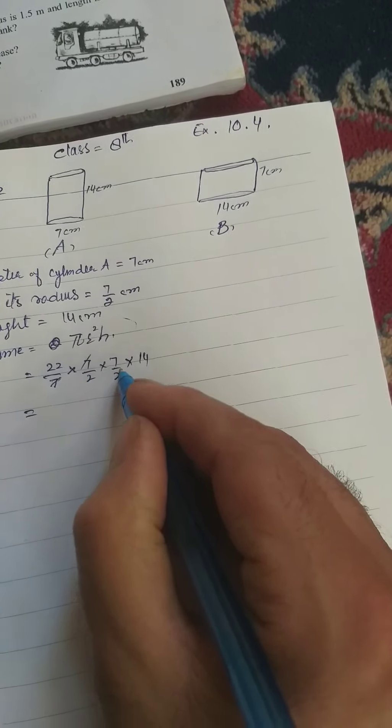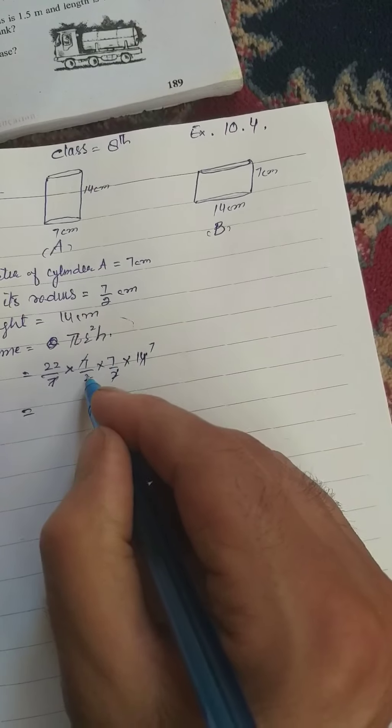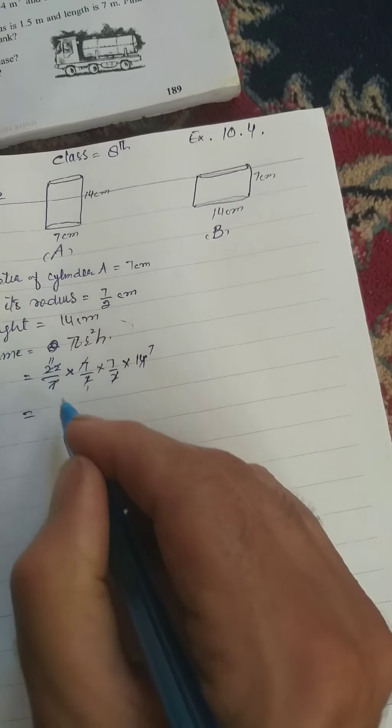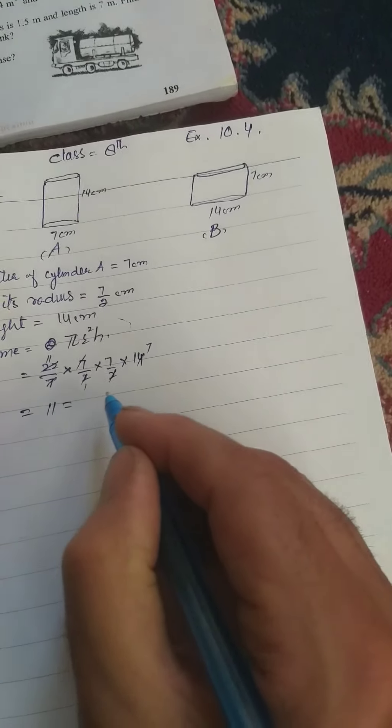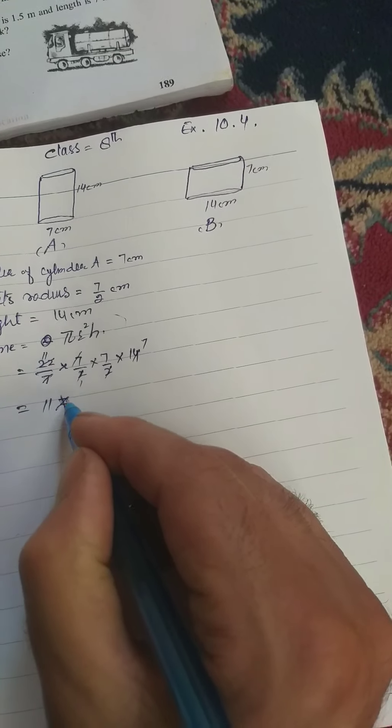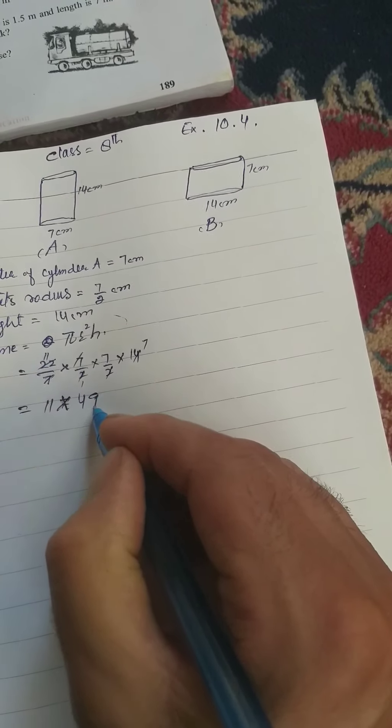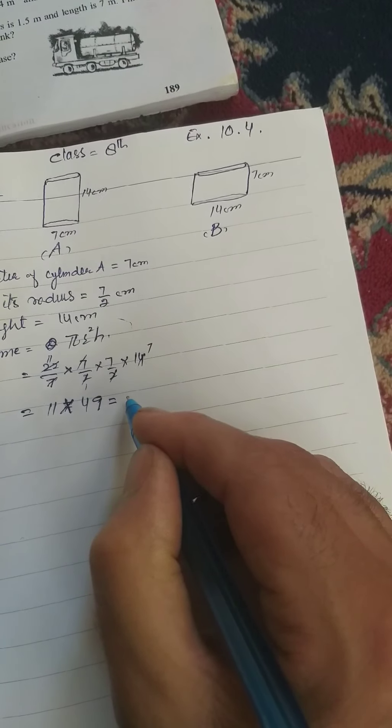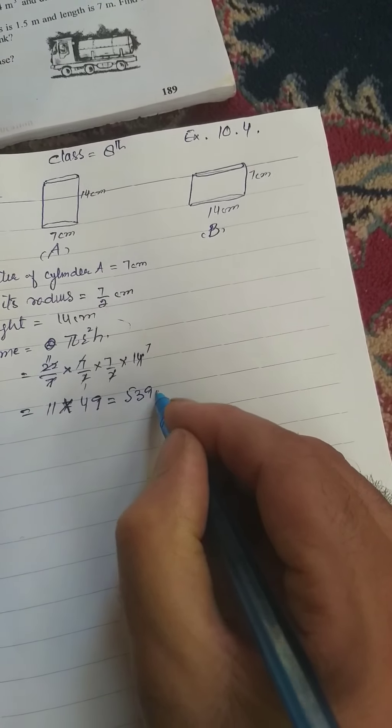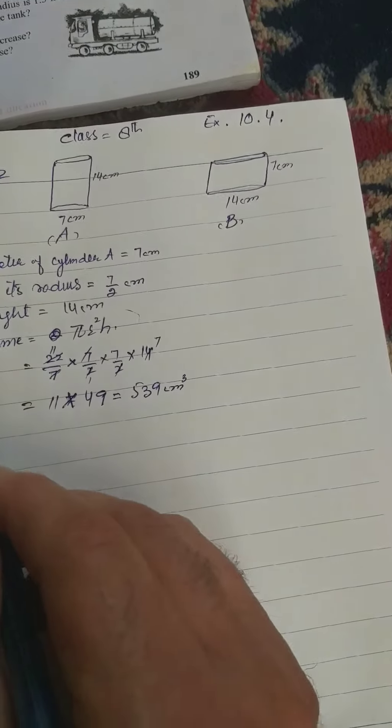2, 1 into 11 into 14, 2 into 11 into 49, 11 into 49, that is equal to 539 cubic centimeter.